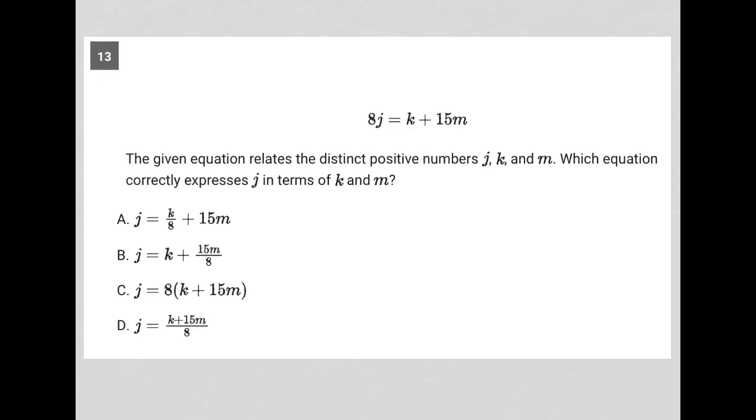So this question starts off by providing us with this equation, 8j equals k plus 15m. It goes on to say the given equation relates to the distinct positive numbers j, k, and m. Which equation correctly expresses j in terms of k and m?